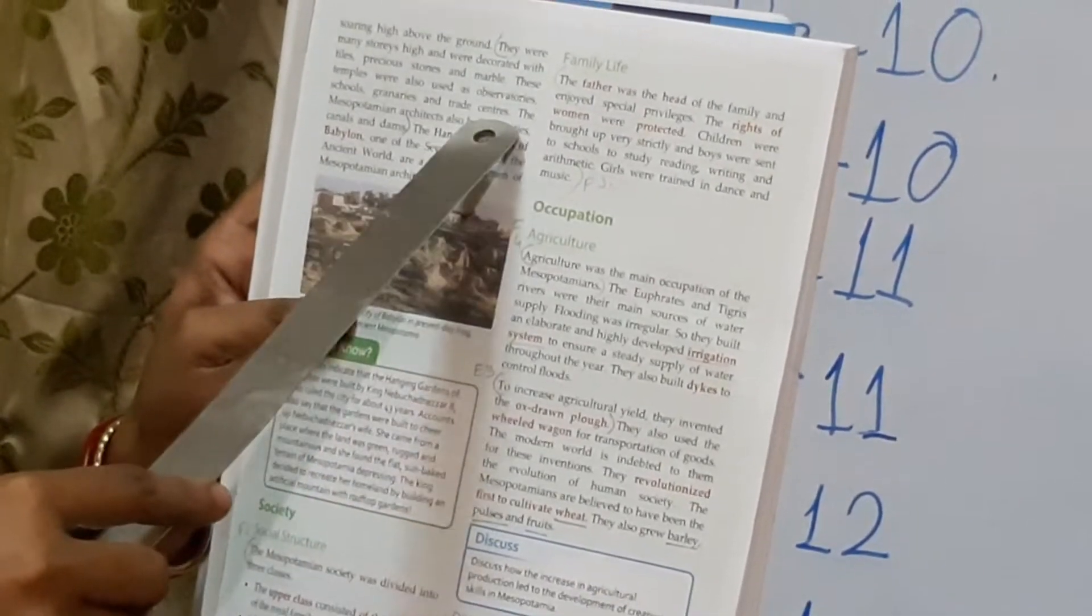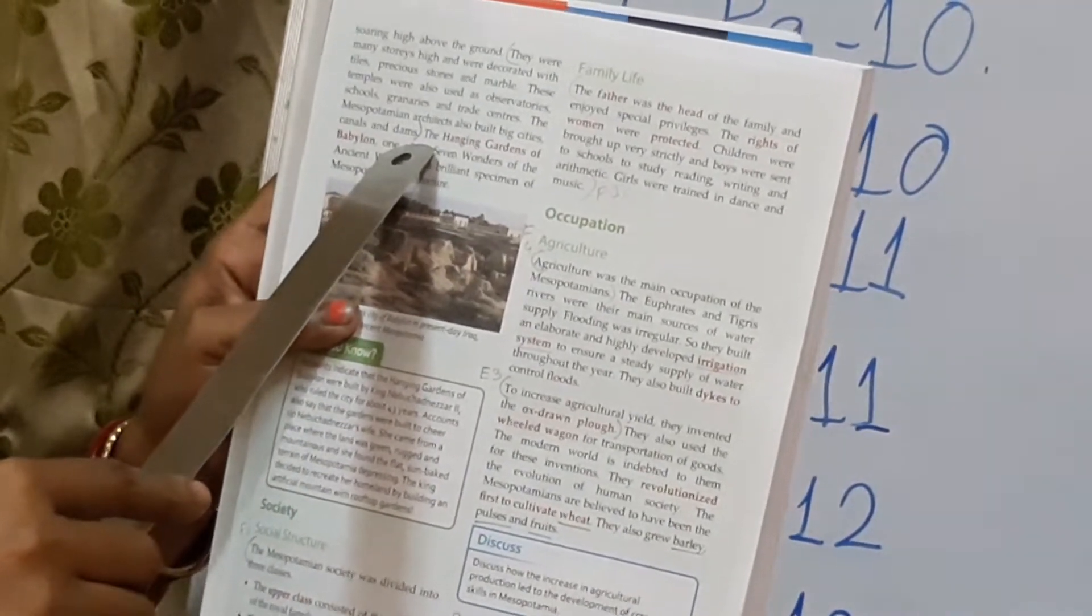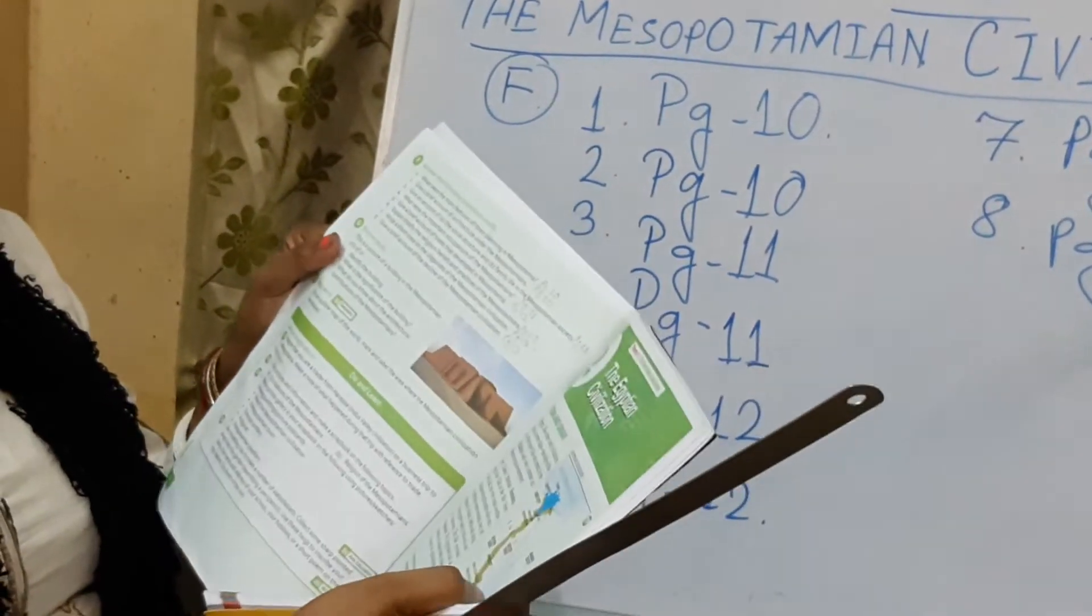After sun-baked bricks you will come to the next page, that is page number 11. From here you will start writing from T-H-E-Y. They were many stories high and were decorated with tiles, precious stones and marble. These temples were also used as observatories, schools, granaries and trade centers. The Mesopotamian architects also built big cities, canals and dams. You will finish the answer here.